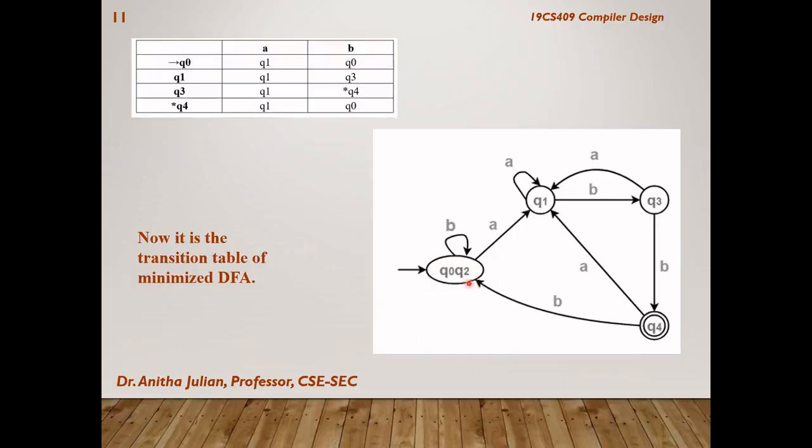Q0 and Q2 have the same set of transitions. That is why we have put together and removed it in the table. So, one state is reduced. Initially, we had 5 states. Now there are only 4 states. So, we have been able to minimize the DFA to 4 states from 5 states.